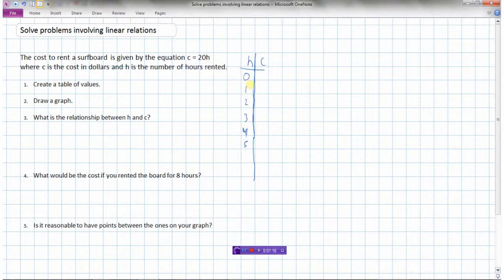So if we rent for zero hours, cost is equal to 20 times H. So if H is zero, 20 times zero is zero, so cost would be zero. If H were two, cost would equal 20 times 2, and 20 times 2 is 40. If H is 3, 20 times 3 would be 60. If H is 4, 20 times 4 is 80. And if H is 5, 20 times 5 would be 100. So it looks like we're definitely dealing with a linear relation here, because H goes up by 1 each time, and C is going up by 20 each time.